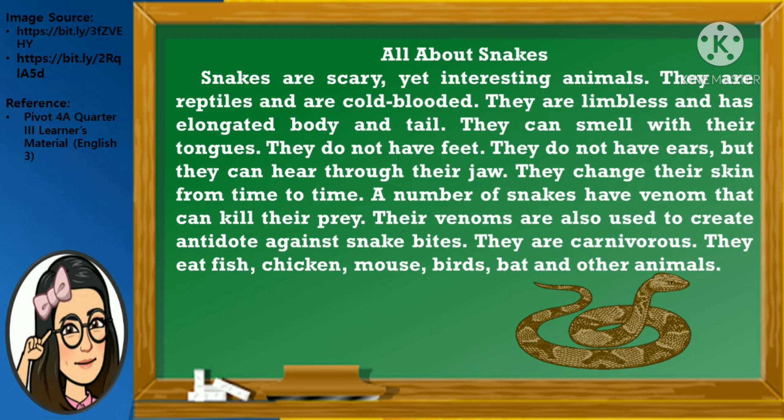They do not have feet. They do not have ears, but they can hear through their jaw. They change their skin from time to time. A number of snakes have venom that can kill their prey. Their venoms are also used to create an antidote against snake bites. They are carnivorous. They eat fish, chicken, mouse, birds, bat, and other animals.